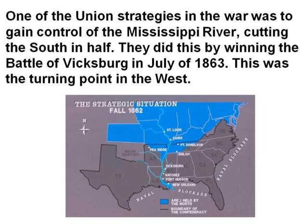One of the Union strategies in the war was to gain control of the Mississippi River, cutting the South in half. They did this by winning the Battle of Vicksburg in July of 1863. This was the turning point in the West.